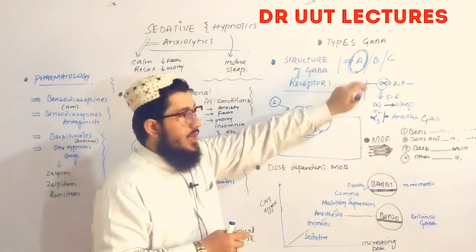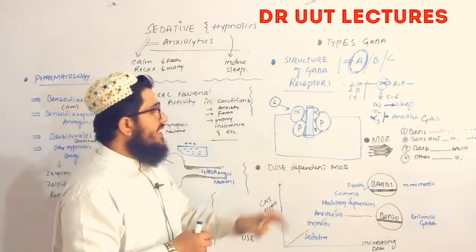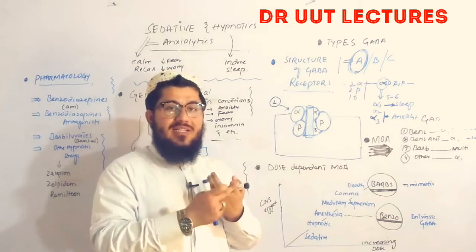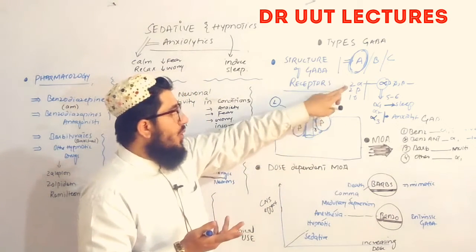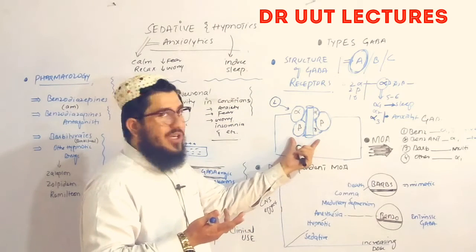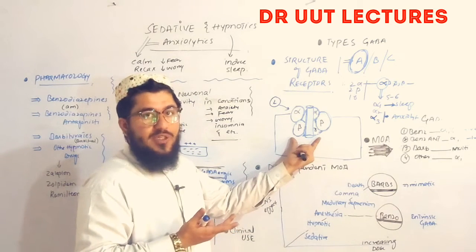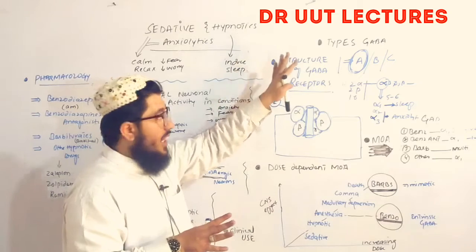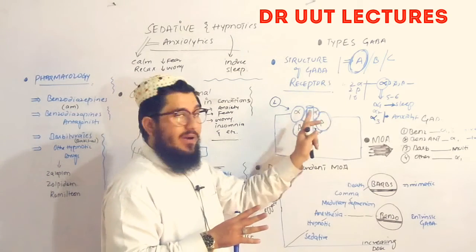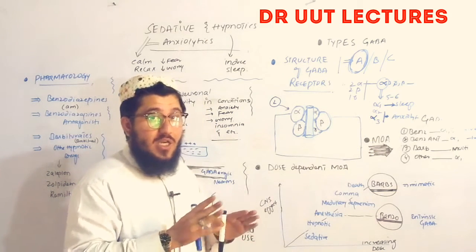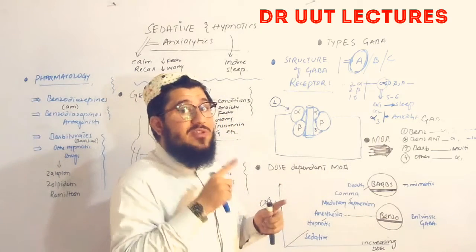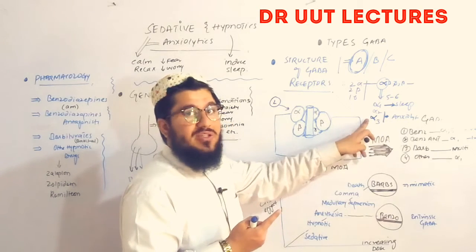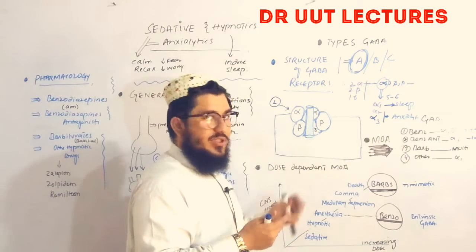In the pharmacology of sedatives and hypnotics, we focus on the GABA-A receptor. The GABA-A receptor is formed by a combination of five protein subunits: alpha, beta, gamma, delta, and rho. In many books, this is described as two alpha, two beta, and one gamma subunits combined together. For this lecture, we will further discuss the subtypes of the alpha subunit — alpha-1, alpha-2, and alpha-3 — because certain drugs acting on alpha-1 cause sleep, while drugs acting on alpha-2 and alpha-3 cause anti-anxiety effects.